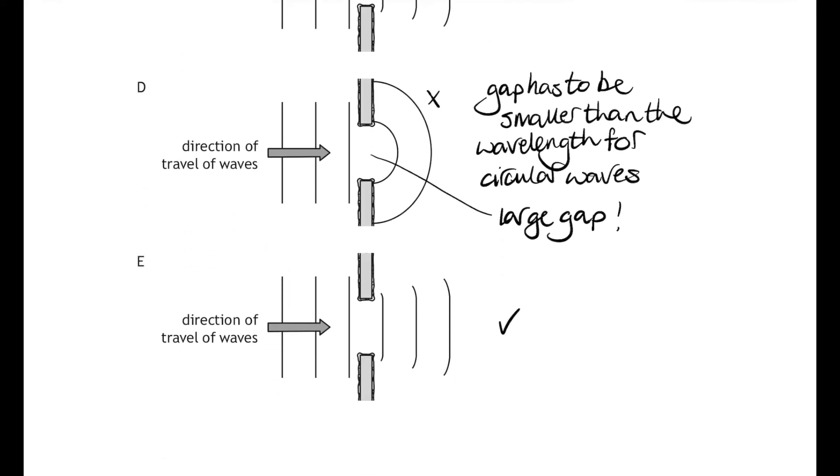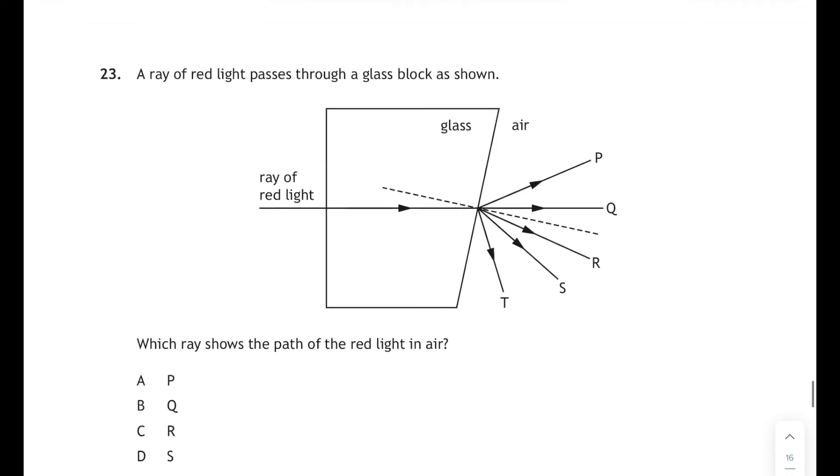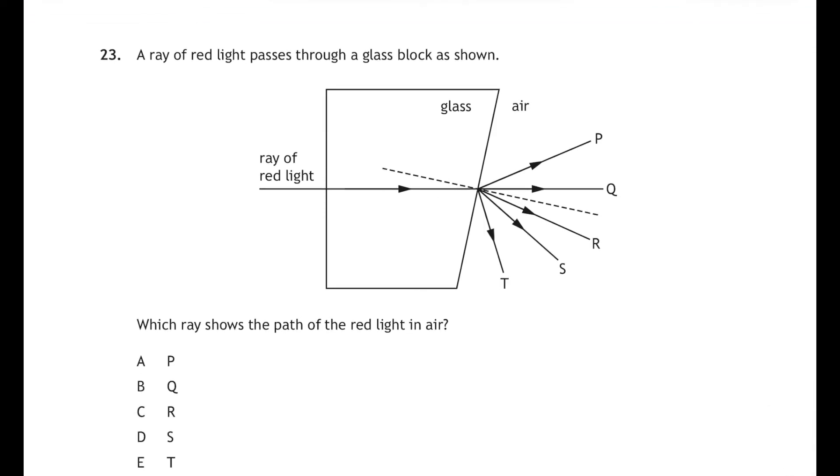Okay, question 23: a ray of light passes through a glass block as shown, and it's going from glass into air. Which ray shows the path of red light in air? Well, when it goes from glass back into air again, it's going to cross over the normal and bend away from the normal. So it's not Q because that's going straight through. It's not R, S, or T because they aren't crossing over the normal, so it can only be ray P, and that corresponds to answer A.